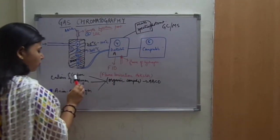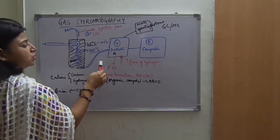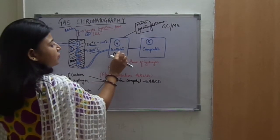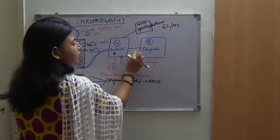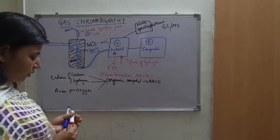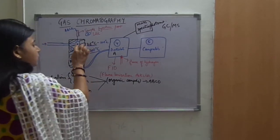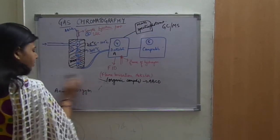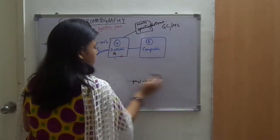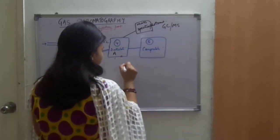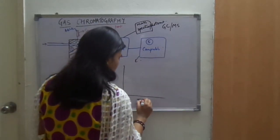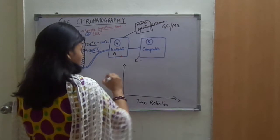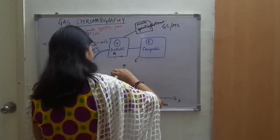After A, B will come and the detector will identify what B is. When C comes, it will detect C, and finally it will detect D. Coming to the computer part: when all these sample components have been detected, they are connected to a computer. In gas chromatography, the time period for which the sample component remains in the column is noted down. This is the retention time, which is taken on the x-axis. On the y-axis, the sample component amount is taken.